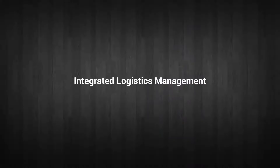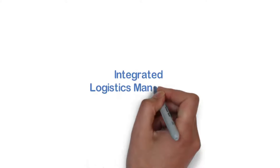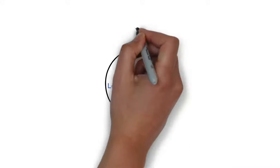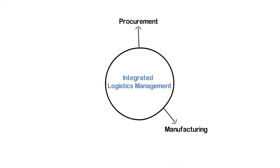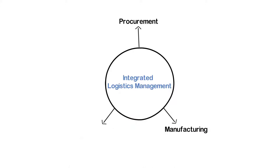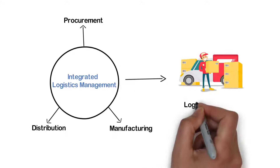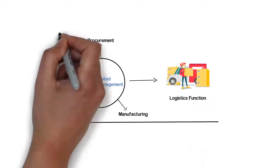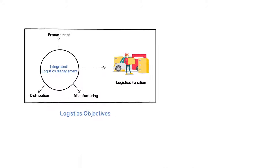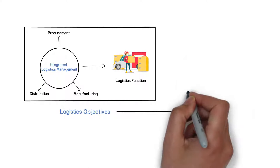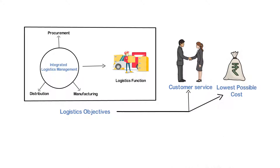Integrated Logistics Management System is an interface between the procurement, manufacturing and the distribution function of the logistics function to achieve the basic objectives of logistics — to provide better customer service at the lowest possible cost.